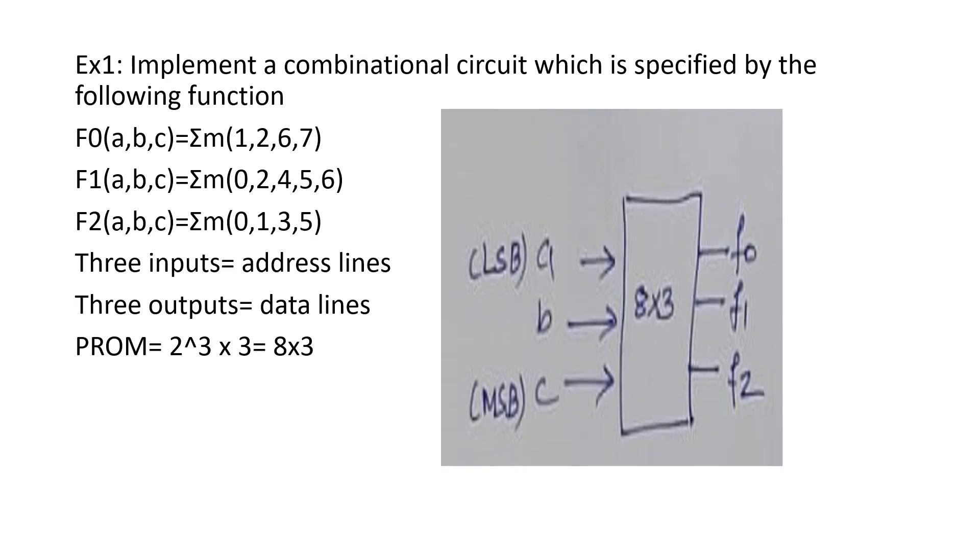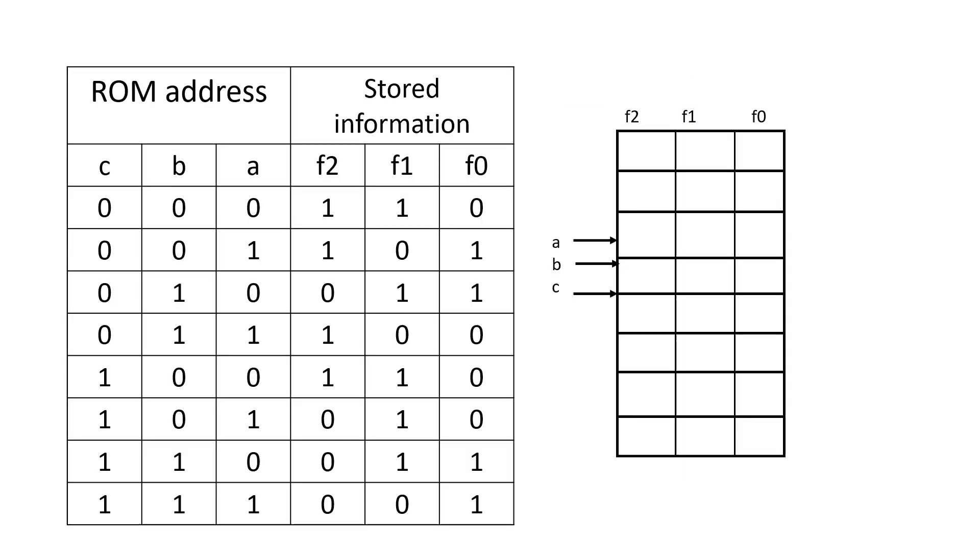Now, let us take an example in which we are going to implement a combinational circuit using PROM. As you can see, there are three functions F0, F1, F2 which are functions of three variables and for each of these functions, summation of minterms is given. From this one information is clear that you are going to need three inputs, three address lines, three outputs that means three data lines. We are going to need a PROM in which there will be three address lines. So, 2 raised to 3, in all eight locations and three output lines that means 8 by 3.